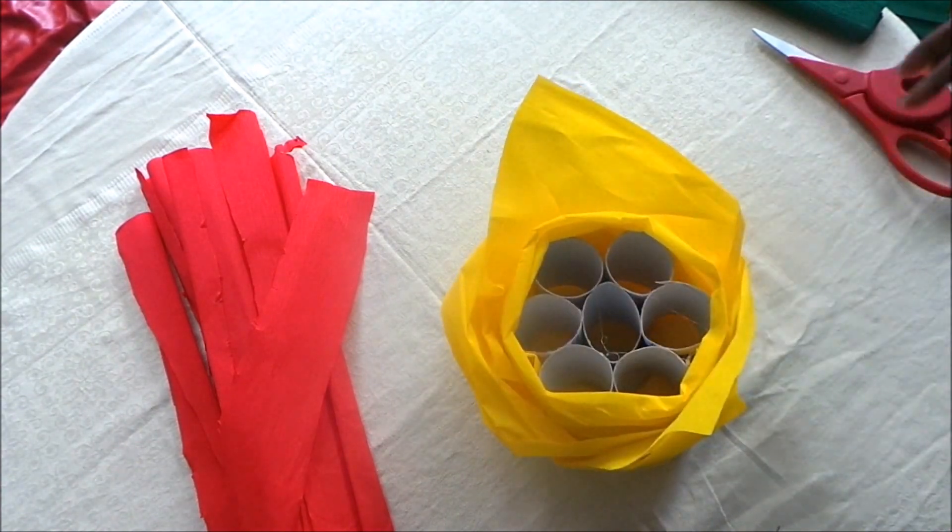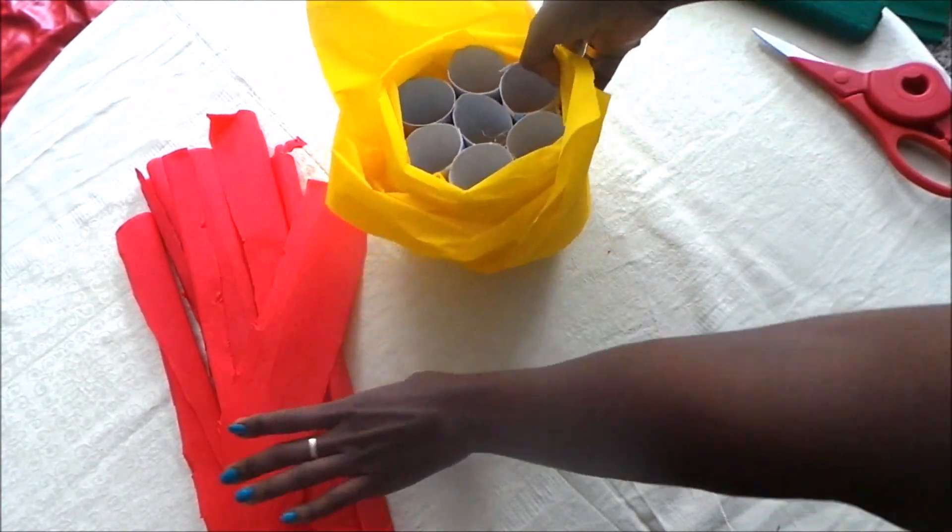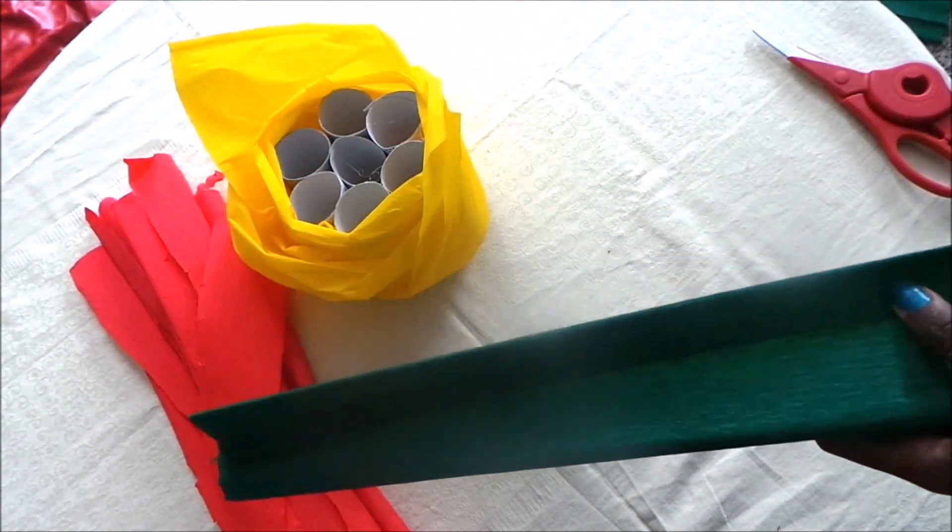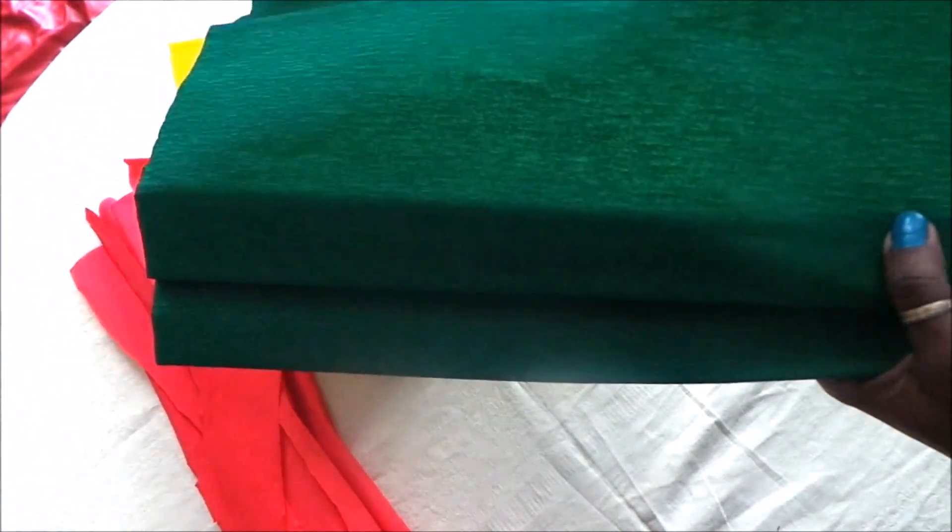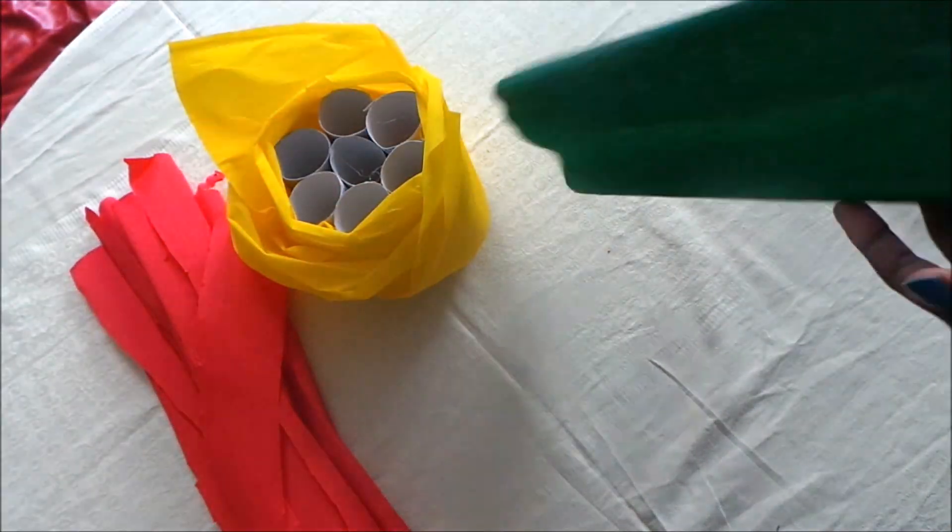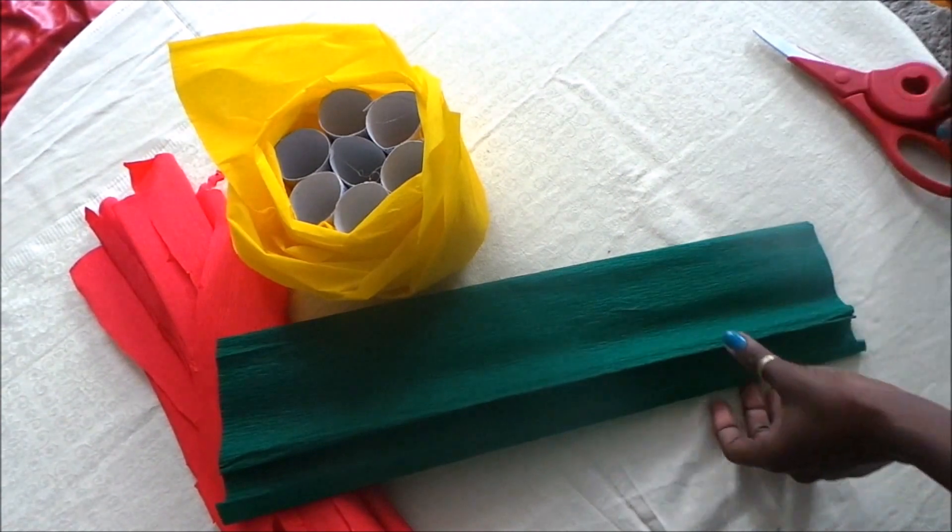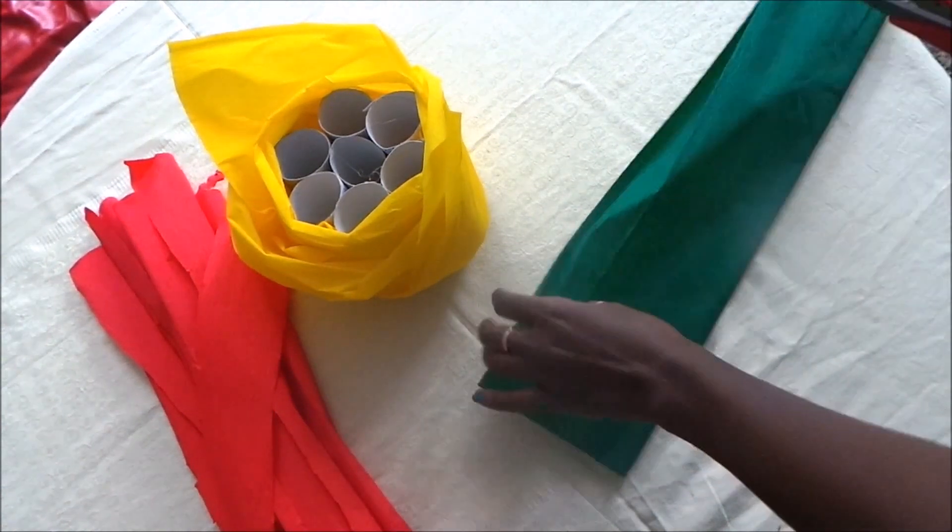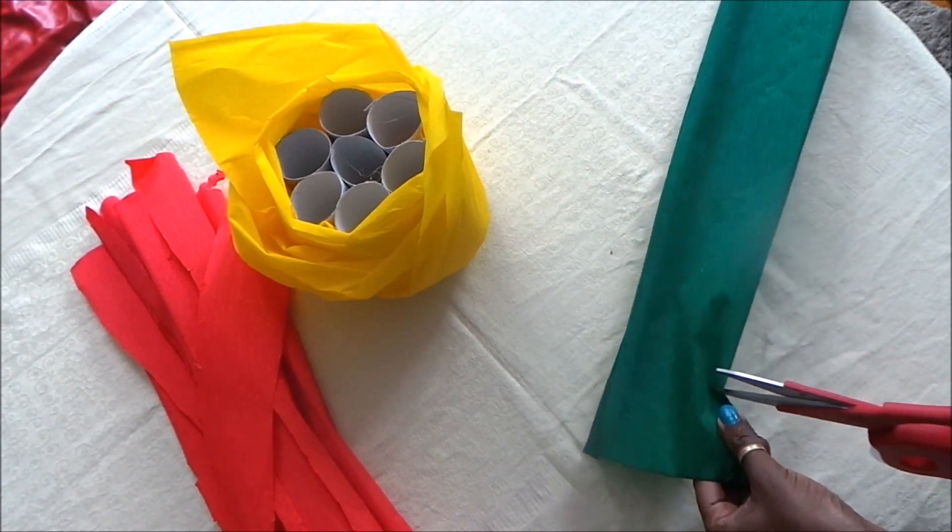Put this one aside with the red ones you've already cut. Then bring this one and cut a small piece like that. Keep cutting small pieces, again seven of them.